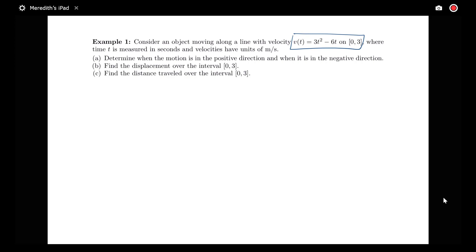First we're asked to determine when the motion is in the positive direction and when it's in the negative direction. Remember that we have motion in the positive direction when velocity is positive and in the negative direction when v(t) is negative. We need to start by finding when v(t) = 0 and then use that to determine when our velocity is positive and when it's negative.